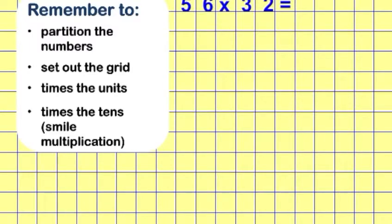First thing is partitioning. So 50 and 6, nice and easy for the first one. 56 is 50, so five tens and six ones. And then the same with the second number, so 32 we've got 30 there, three tens and two, lovely.